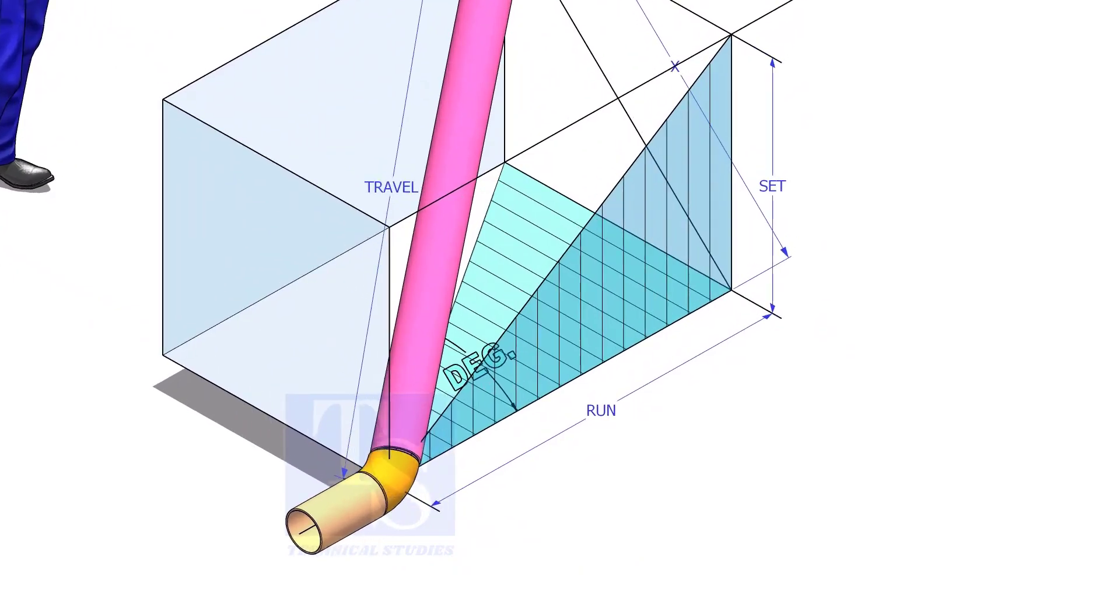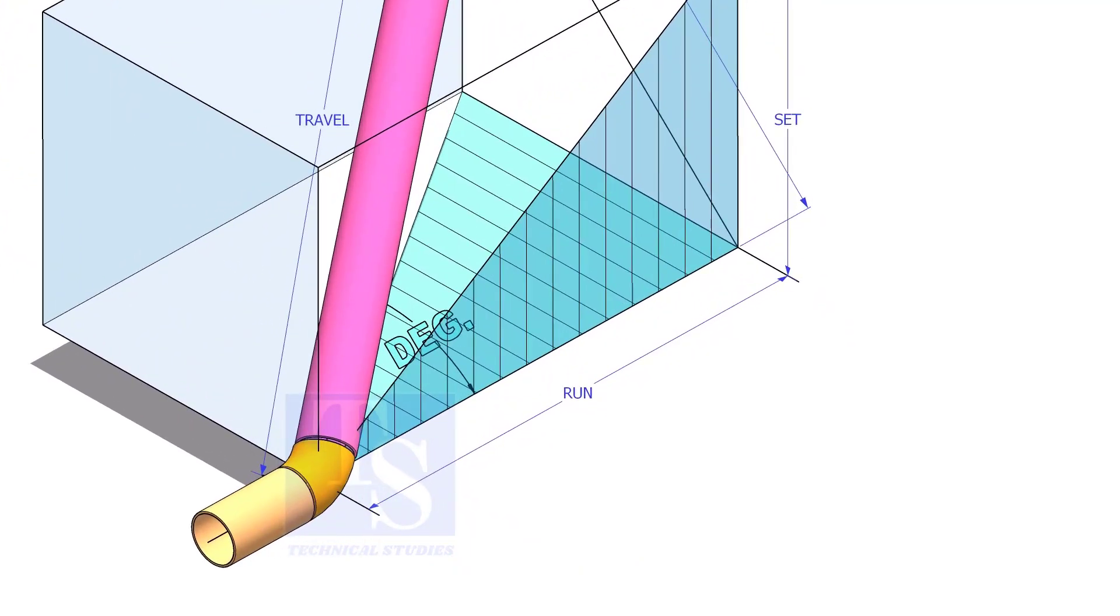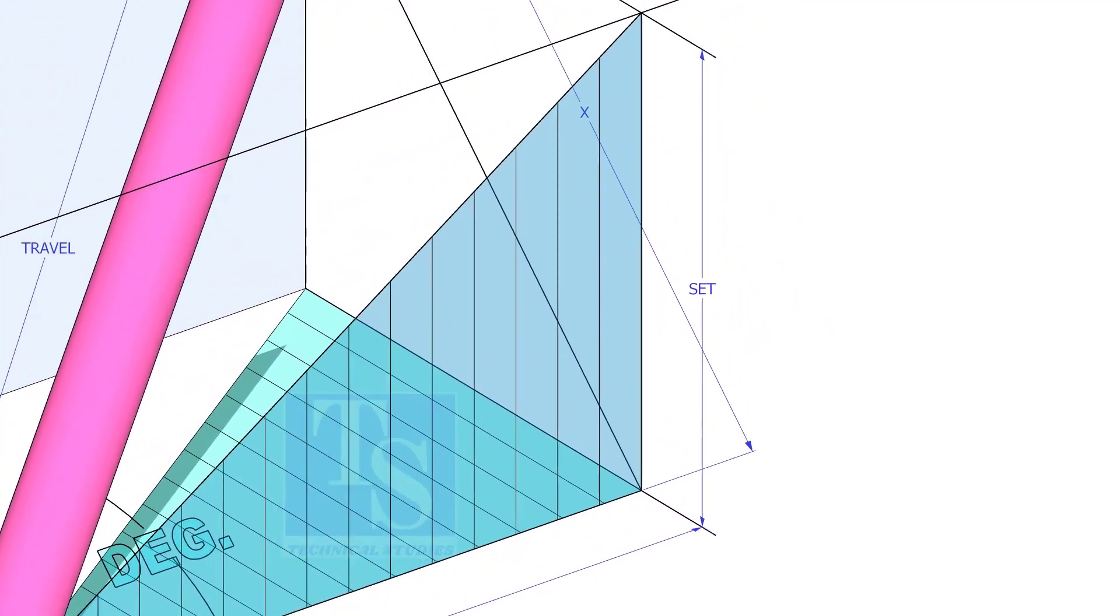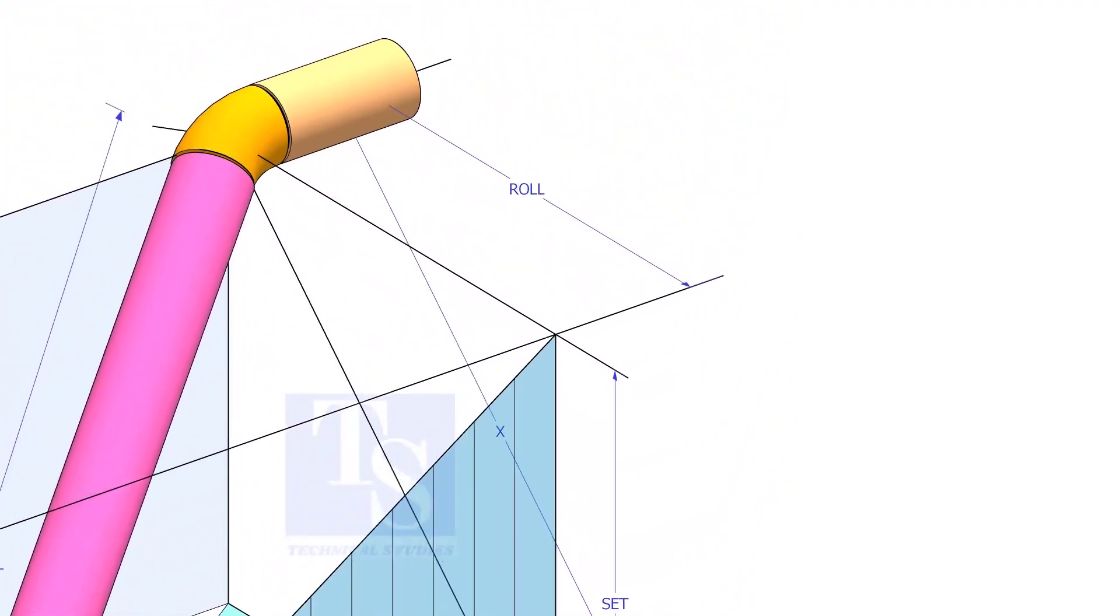In this video, I will show you how to calculate the travel length and the including angle of a double rolled offset pipe.